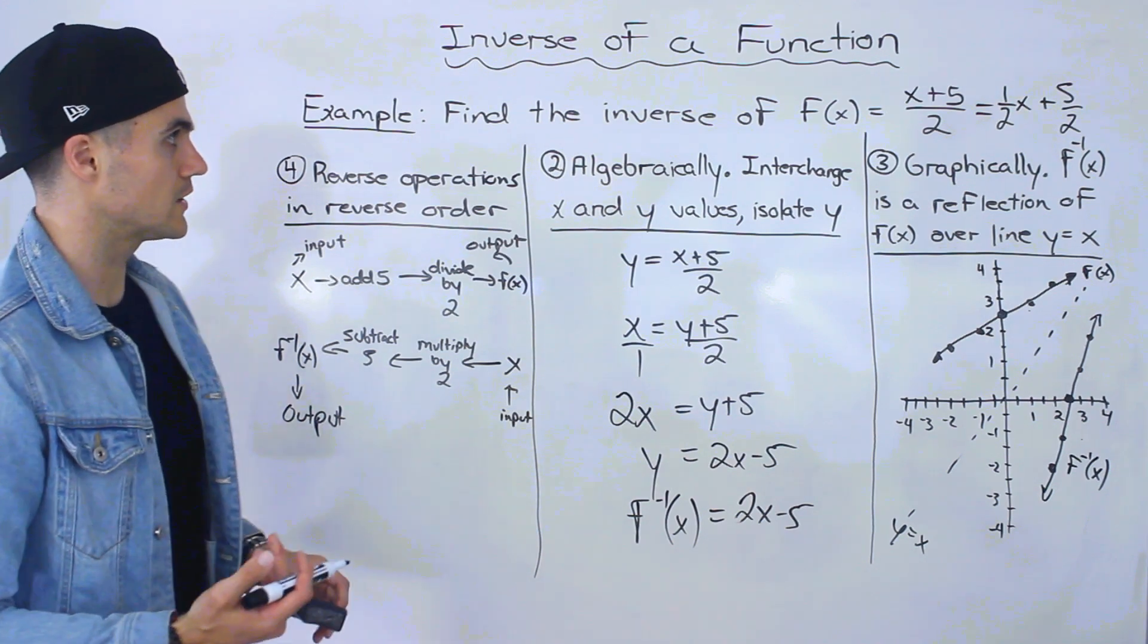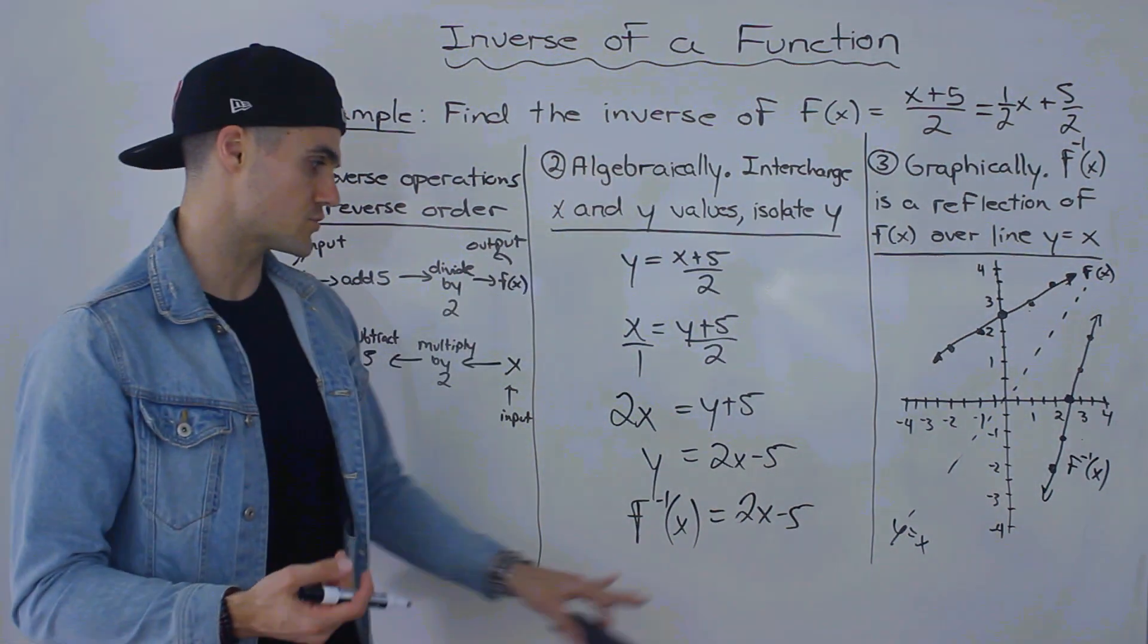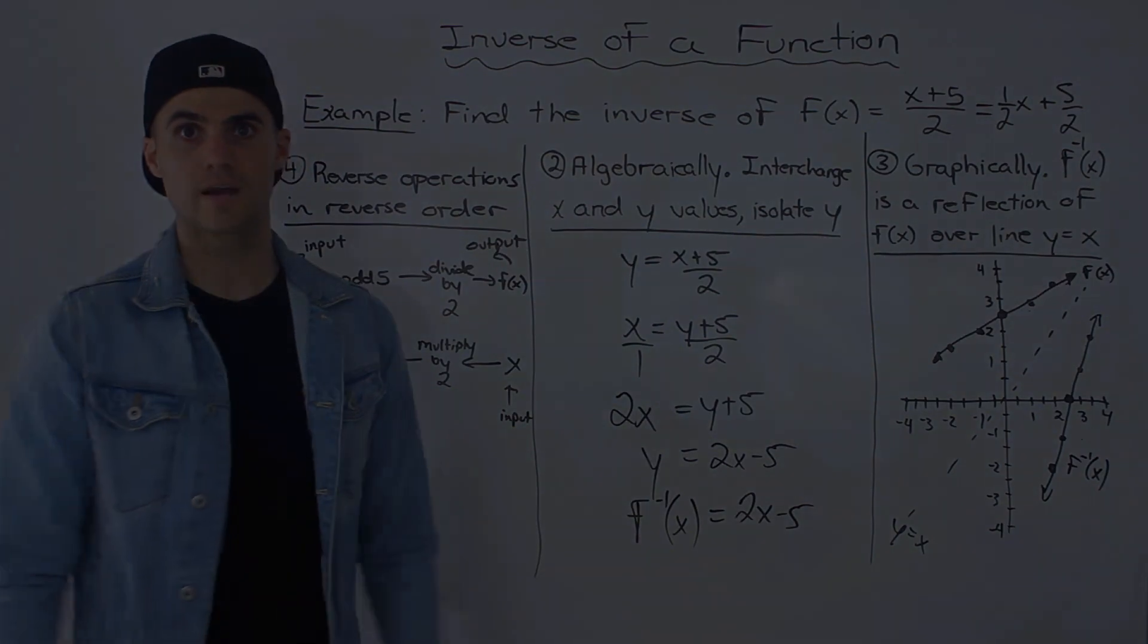So multiple ways to do it. x plus 5 over 2, the inverse of that is 2x minus 5.